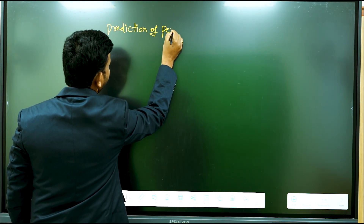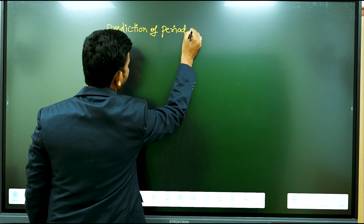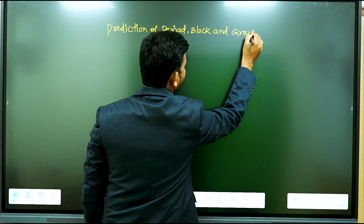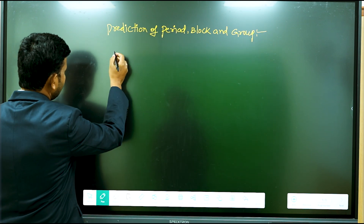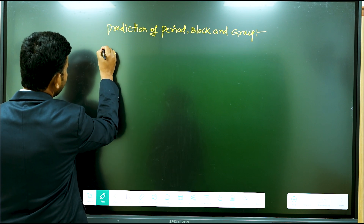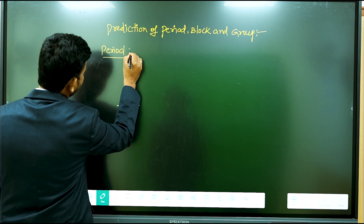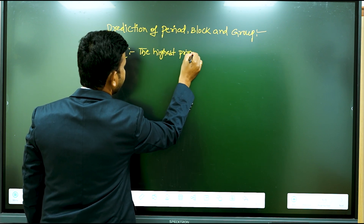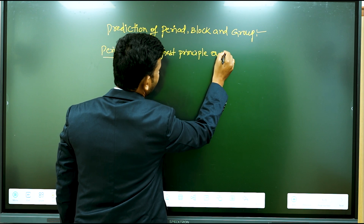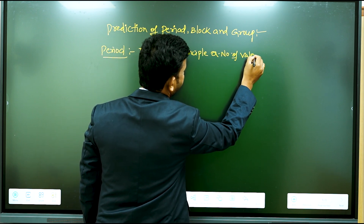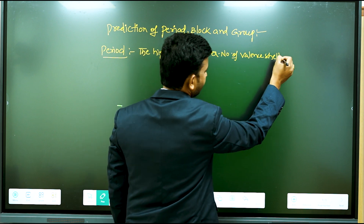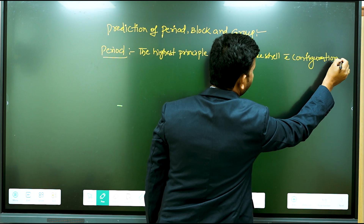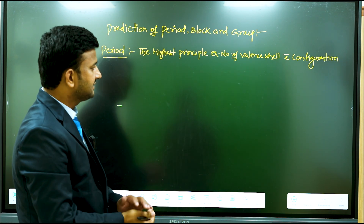Prediction of period, block, and group. For any element, period is equal to — period is nothing but — the highest principal quantum number of the valence shell electronic configuration.